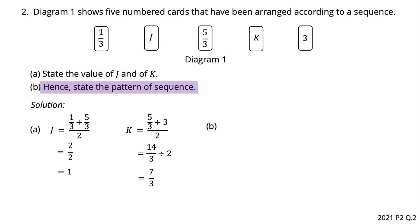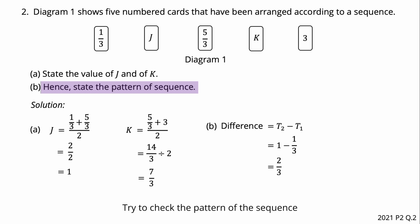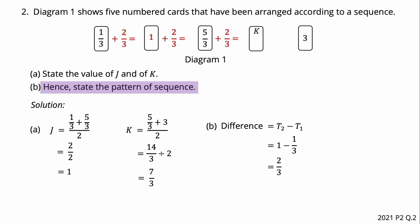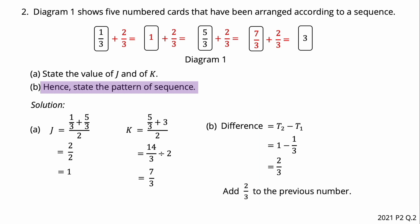To state the pattern of the sequence, we find the difference between consecutive terms: term 2 minus term 1 gives 1 minus 1/3 equals 2/3. Checking: 1/3 plus 2/3 equals 1; 1 plus 2/3 equals 5/3; 5/3 plus 2/3 equals 7/3; 7/3 plus 2/3 equals 3. Therefore, the pattern of the sequence is to add 2/3 to the previous term.